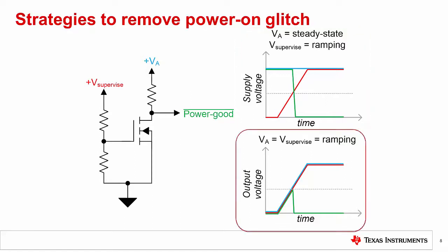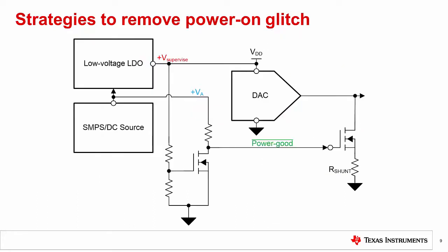In the lower plot, we see what would happen if the VA supply is the same as the supply being supervised. Here we see that the power good signal basically stays low, which is a problem when the supply is just starting to ramp, as that is when the output glitch is most likely to occur. A good solution to this problem is to supply the supervisor circuit using a voltage that is greater than and ramps earlier than the supply you need to supervise.